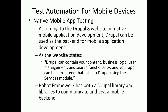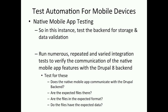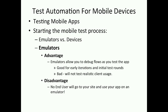And quickly to native mobile app testing. According to the Drupal 8 website, Drupal can be used as the back end for a mobile application. The website itself says Drupal can contain your content, business logic and management. And so your app can be the front end that communicates with Drupal on the back end. For back-end testing, the robot framework tool has a Drupal library and other libraries that can test the back end. So the back end is used for storage and native validations — and questions to ask: does the native mobile app communicate with Drupal back end? Is expected data there? Are the files in the expected format and do they have the right data?